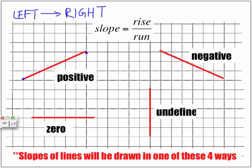And if we have a line that goes vertically up and down, this is what we call an undefined slope.